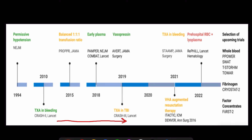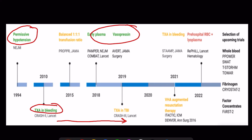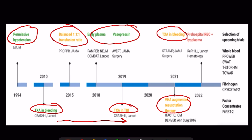The interventions are reported in green for trials showing benefit in their primary endpoint. For trials that did not show benefit in their primary endpoint but were positive in pre-planned post-hoc or subgroup analysis, the interventions are reported in orange. The REP-HILL trial did not show benefit from pre-hospital transfusion of red blood cells and lyophilized plasma, shown in red.